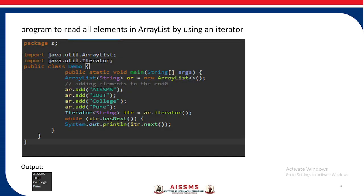Consider an example where a program reads all elements in an ArrayList using an iterator. A class Demo is written and an ArrayList is created. Elements are added to the ArrayList: AISSMS, IOIT, College, Pune. Once the values are added using the add method, we iterate — displaying them one by one using the iterator's hasNext method — and the values are displayed as AISSMS, IOIT, College, and Pune.